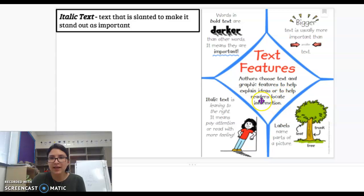Authors choose text features to help explain ideas or to help readers locate information. So whenever you come across a table of contents, that lets the reader know this page is giving us information where we can find different things. Bold text lets the reader know that word is important. Or a diagram helps the reader explain what we're reading about and gives us a visual.